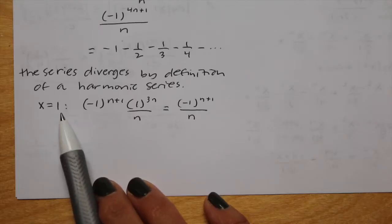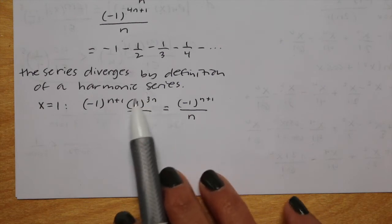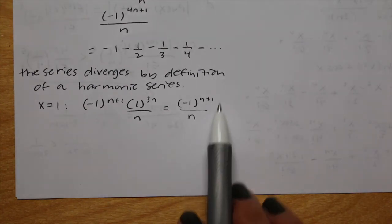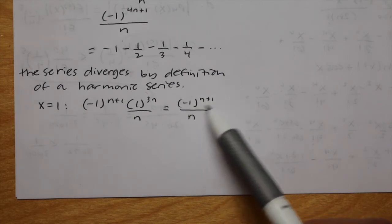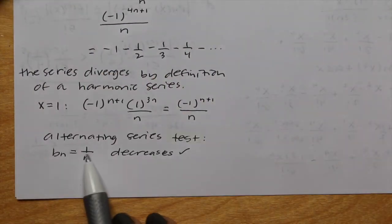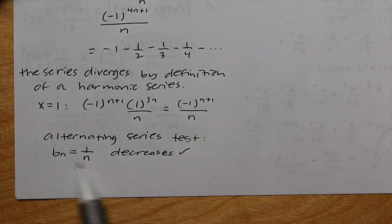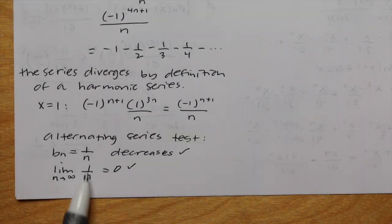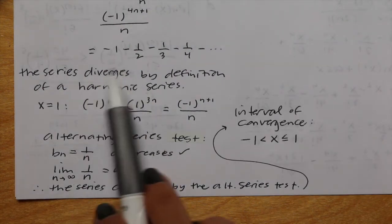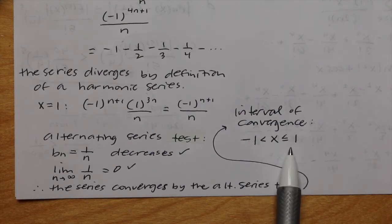Checking x equals positive 1, plugging in 1 for x gives negative 1 to the n plus 1 times 1 to the 3n over n. Since 1 to the 3n is just 1, we get negative 1 to the n plus 1 over n. Plugging in 1, 2, 3, 4 gives plus, minus, plus, minus — an alternating series. By the alternating series test, b sub n equals 1 over n, the terms decrease, and the limit as n goes to infinity of 1 over n equals 0, so the series converges. Since x equals negative 1 diverged and x equals positive 1 converged, the interval of convergence is negative 1 less than x less than or equal to positive 1.